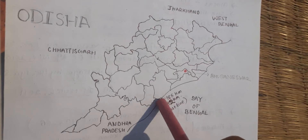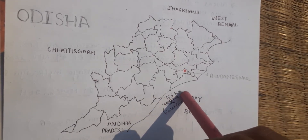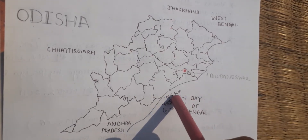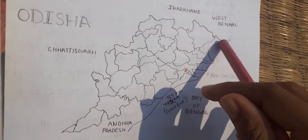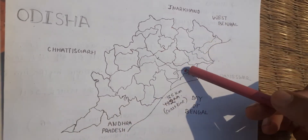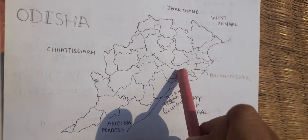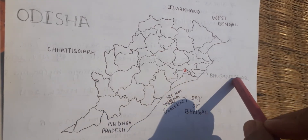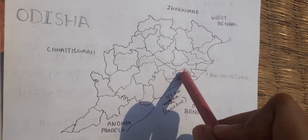The coastline of Odisha is about 485 km. The capital of Odisha is Bhubaneswar, located in Khordha district.